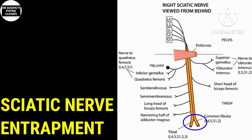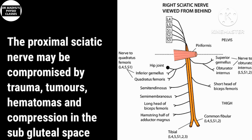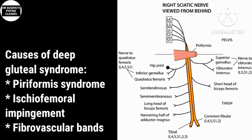The sciatic nerve is divided into the tibial and common peroneal nerve, which give motor and sensory supply to the anterior, lateral, and posterior lower leg as well as to the sole of the foot. Proximally, the sciatic nerve can be compromised by trauma, tumor, or hematoma, and it can be compressed within the gluteal space — what we call deep gluteal syndrome. Deep gluteal syndrome includes piriformis syndrome, ischiofemoral impingement, and fibrovascular bands.